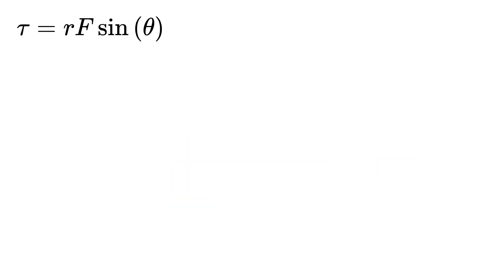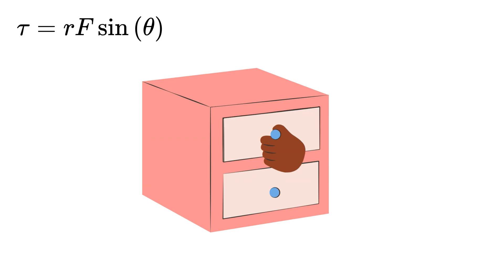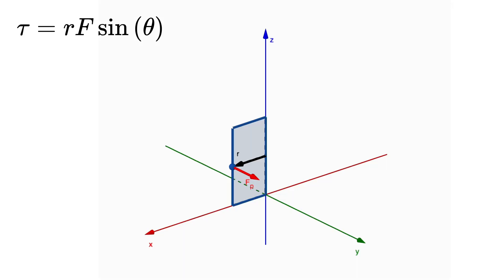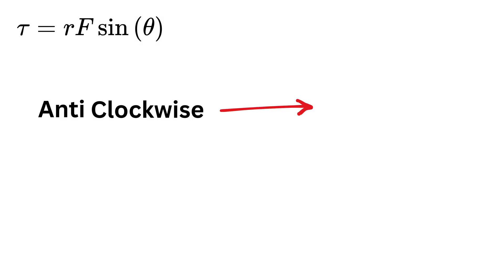Now, torque is not just a scalar quantity, but it also has a direction. Just like force can push or pull, torque can rotate an object clockwise or anticlockwise. By convention, anticlockwise torque is considered positive, and clockwise torque is considered negative.